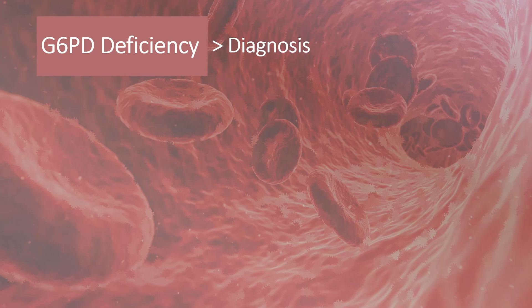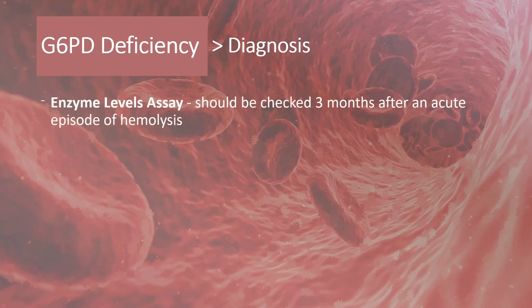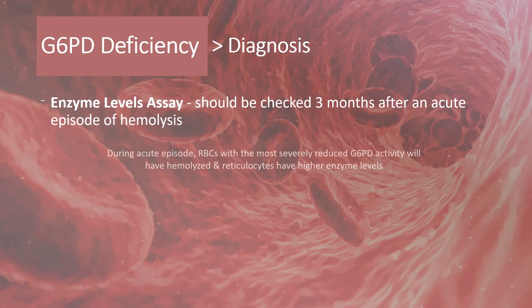Diagnosis is made by G6PD enzyme assay. Enzyme levels should be checked around three months after an acute episode of hemolysis. This is because during an acute episode, RBCs with the most severely reduced G6PD activity will have hemolyzed, and newly formed reticulocytes have higher enzyme levels. Therefore, an enzyme assay at that time will give a falsely negative normal G6PD result.